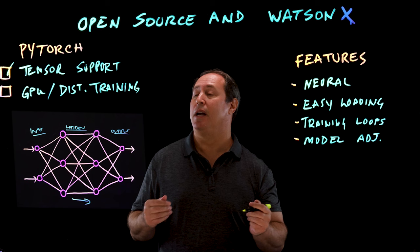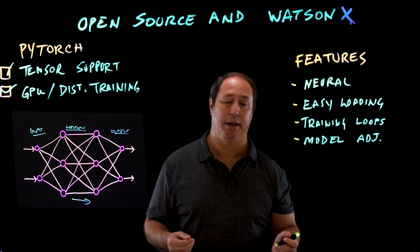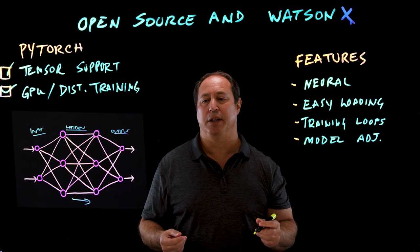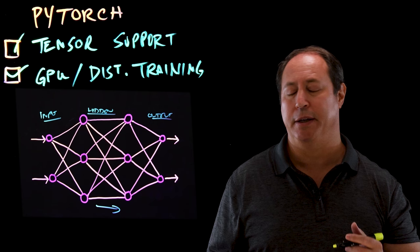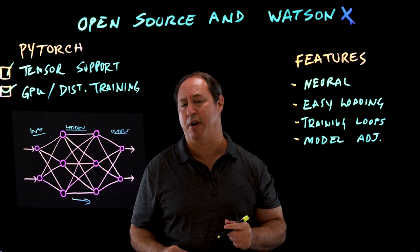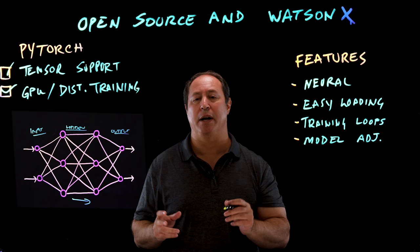The other key features that PyTorch provides are GPU support and distributed training. When we train the models, we're doing large amounts of computation, and the GPUs that PyTorch is able to effectively use allow us to do that very efficiently. PyTorch also provides distributed training, so with those large foundation models that wouldn't fit on a single machine, PyTorch enables us to do distributed training across a large number of machines.